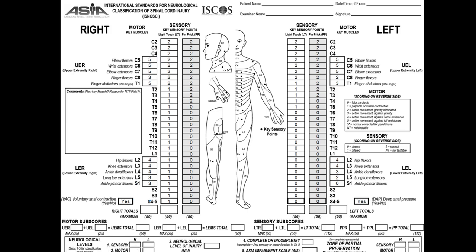Let's take one last example. The sensory level on the right is T1, and on the left it's C8. The motor level is C8 on the right and C7 on the left. So T1, C8, C8, C7 — this seems familiar to the previous one. The neurological level of injury is the most cephalic of those, so it is C7.